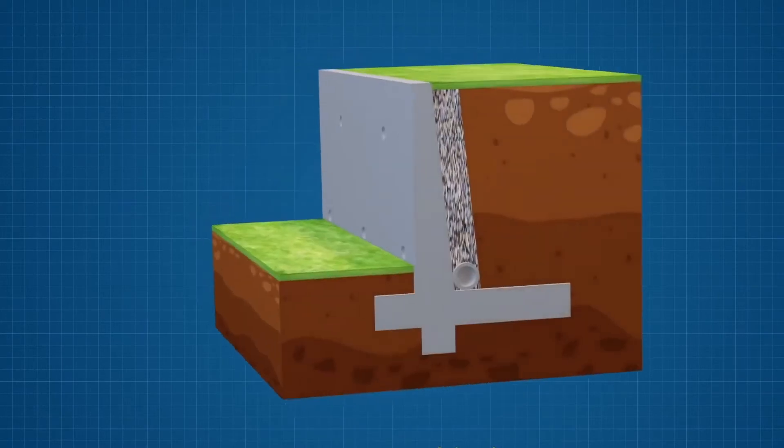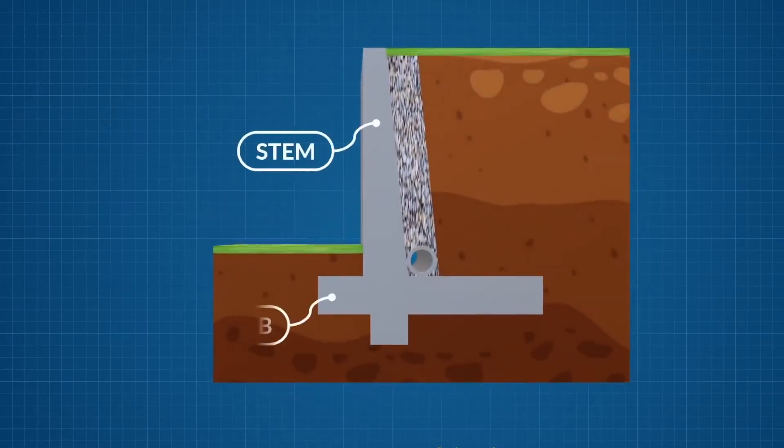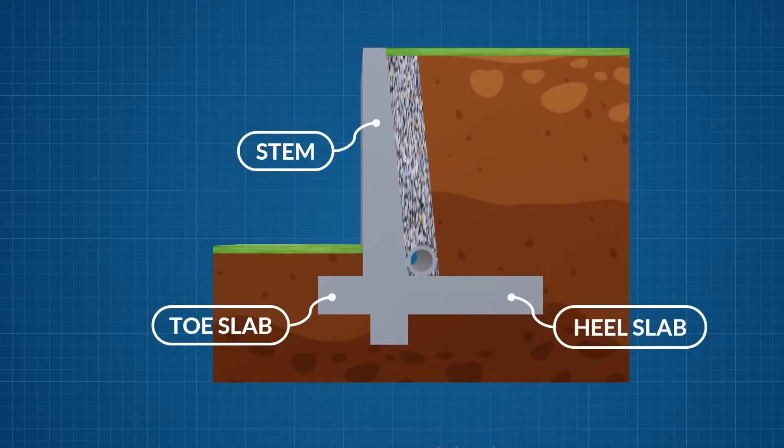Coming in a wide range of shapes, sizes and materials, retaining walls can include three components: stem, toe slab and heel slab.